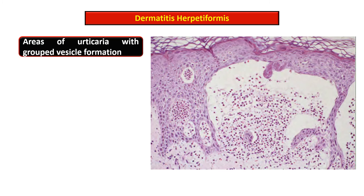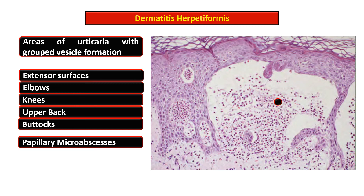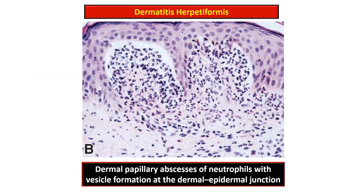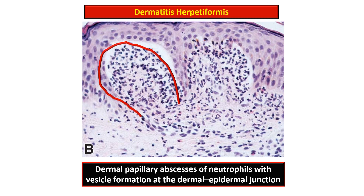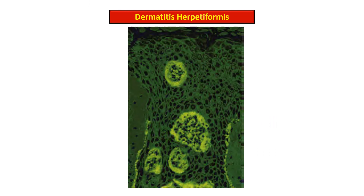Dermatitis herpetiformis is characterized by areas of urticaria with grouped vesicle formation on the extensor surfaces — elbow, knee, upper back, and buttock — with presence of papillary micro-abscesses and subepidermal blisters. This photomicrograph shows dermatitis herpetiformis with micro-abscesses at the dermal papillae and an underlying vesicle at the dermoepidermal junction. The IgA antibodies are directed against reticulin, an important part of the anchoring fibril that connects the epidermal basement membrane to the dermis.